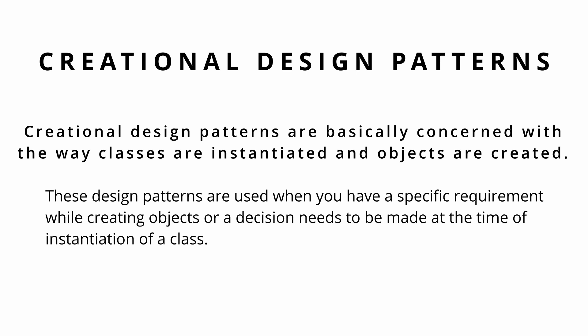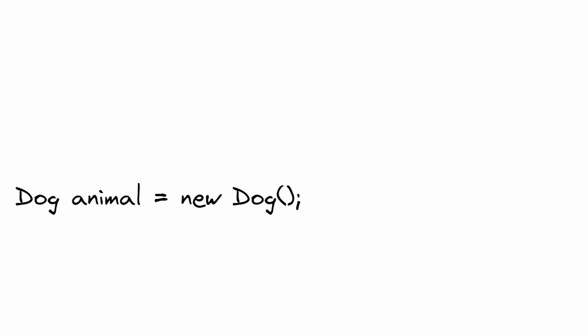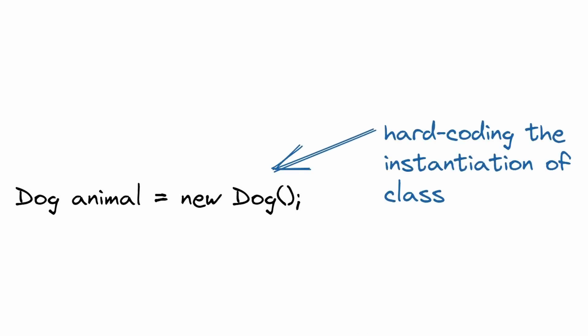Creational design patterns are used when you have a specific requirement while creating objects, or a decision needs to be made at the time of instantiation of a class. We know we can create a new object using the new keyword in Java or any other programming language, but the problem with this is that we are hard-coding the instantiation of the class, which is not a good practice.